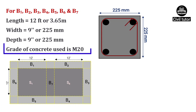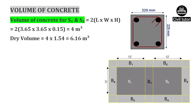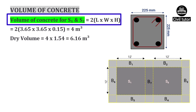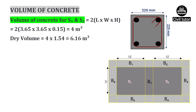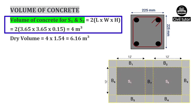The grade of concrete used is M20. Now we need to calculate the volume of concrete. Volume of concrete for slabs S1 and S2 will be equal to twice the length into width into height of slab. Length and width of slab are 3.65 meters each, and the thickness of slab is 0.15 meters. So on substituting these values, the volume of concrete for S1 and S2 will be equal to 4 cubic meters.